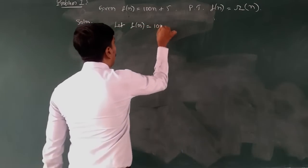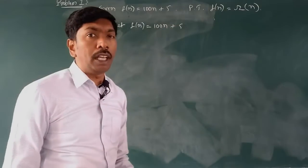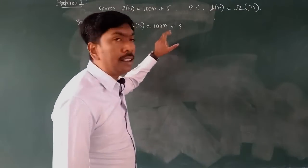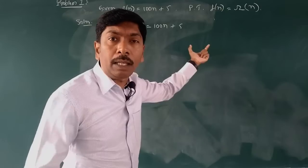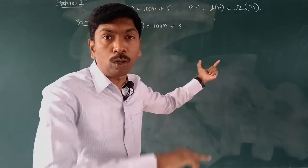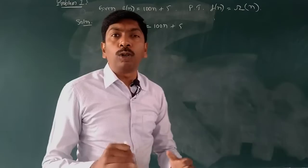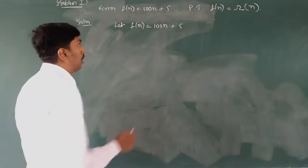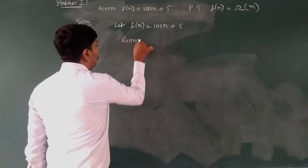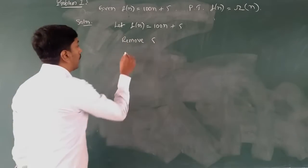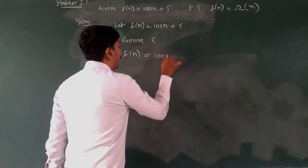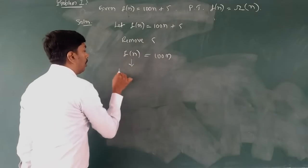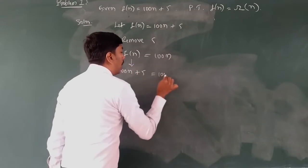Let f(n) = 100n + 5. In Big O Notation we replace the smaller element; but in Omega Notation we just remove it. So we remove the constant 5. After removing, f(n) = 100n. So 100n + 5 is equal to 100n for our purposes.